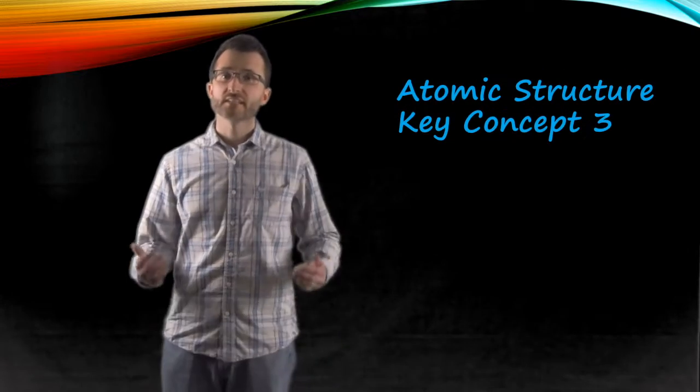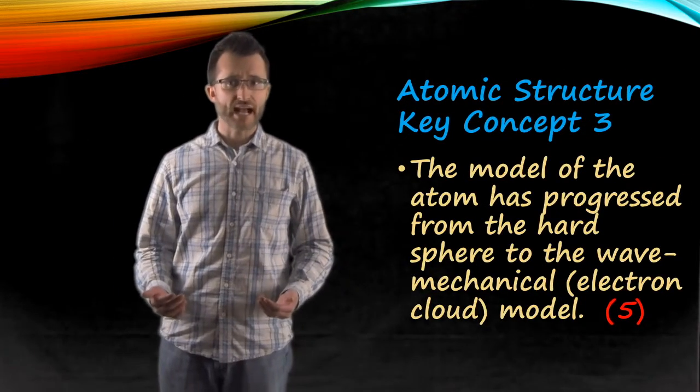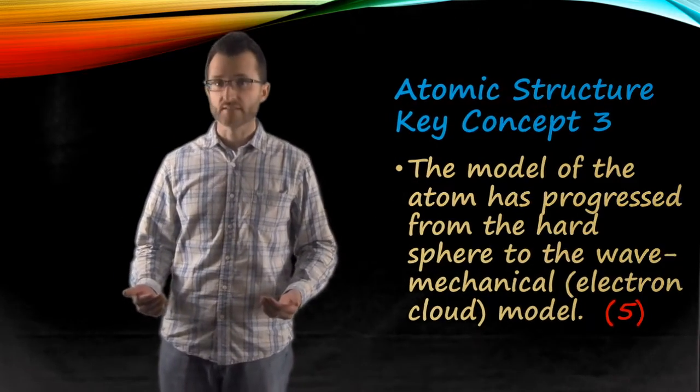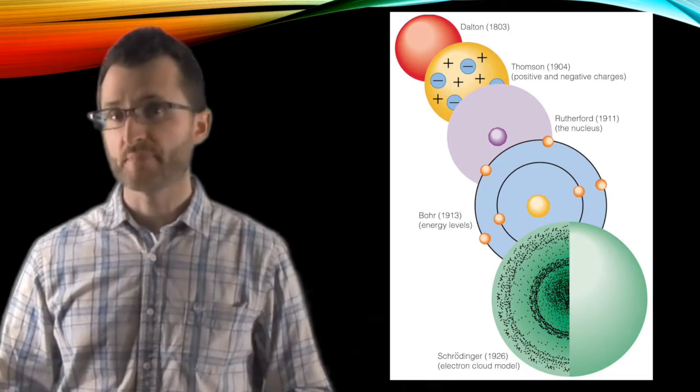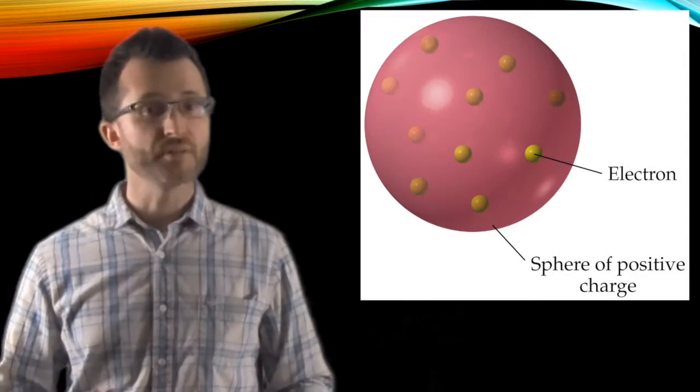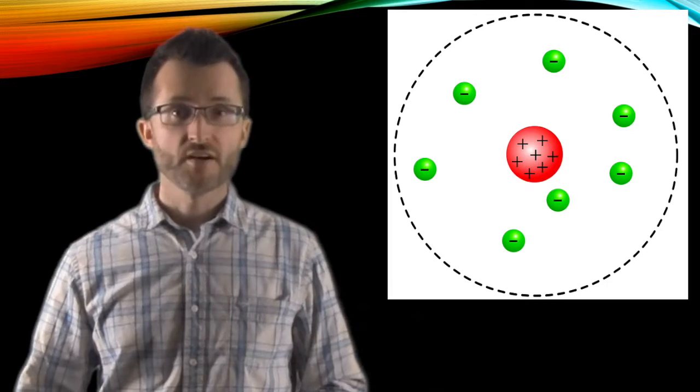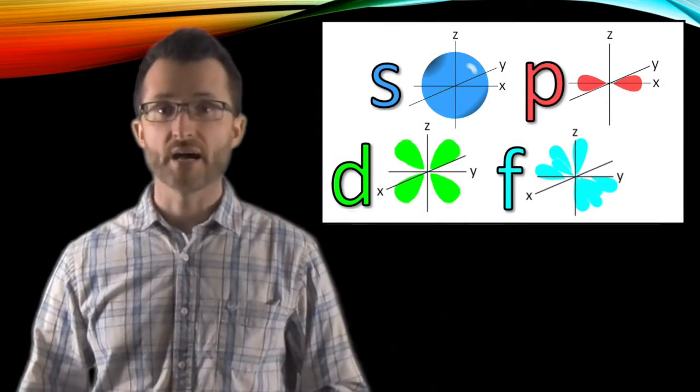Atomic structure, key concept three. The model of the atom has progressed from the hard sphere to the wave mechanical electron cloud model. The Regents really wants you to know your models and the order in which they appear. So, again, we have the hard sphere model that starts things off, followed by the plum pudding model, then the nuclear model, followed by the Bohr or planetary model, followed by our modern electron cloud, wave mechanical model.